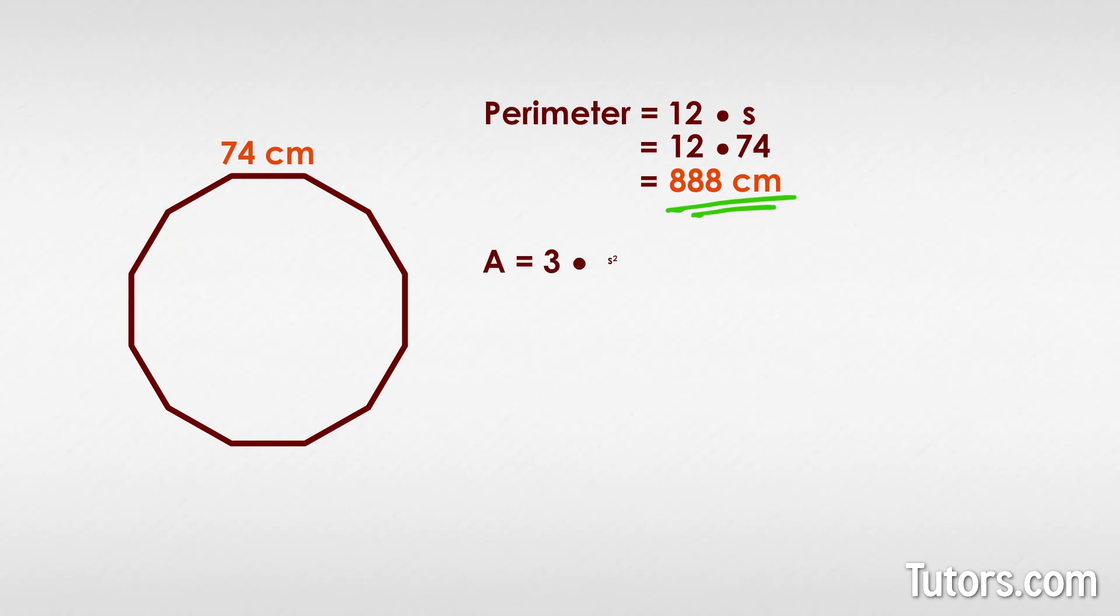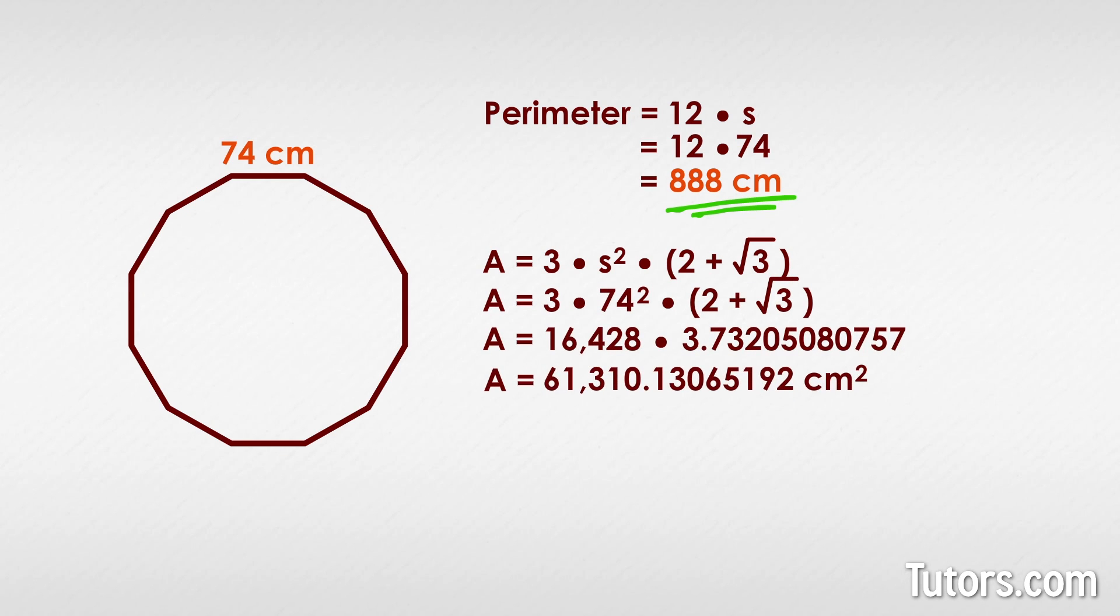Now let's plug our known side length, 74, into our area formula and solve it. Our answer is a equals 61,310.130 centimeters squared or 6.1310 meters squared.